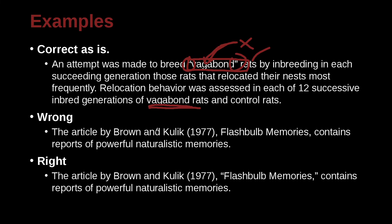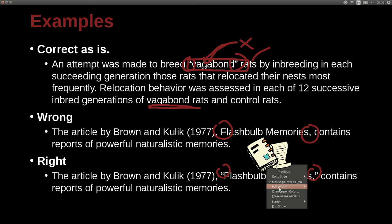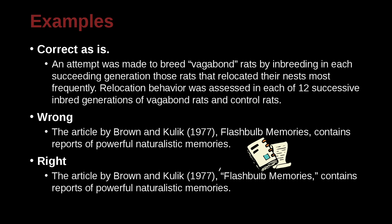The article by Brown and Kuluk, 'Flashbulb Memories,' contains reports of powerful naturalistic memories. This is an article inside of a journal, so we need the quotation marks. Pay attention: there is a comma, one space after the comma, and this comma goes inside the quotation marks. Then one space after the quotation marks. Please remember that.